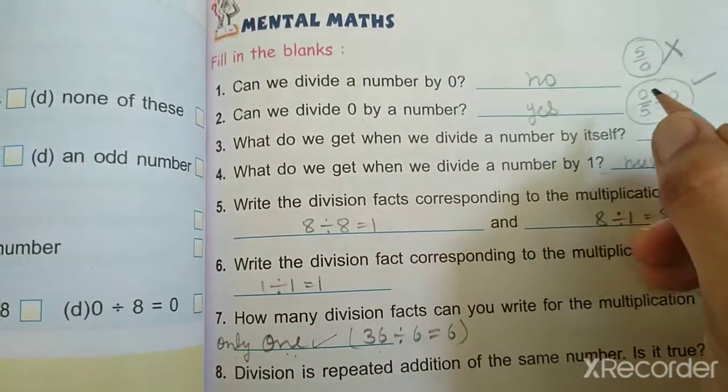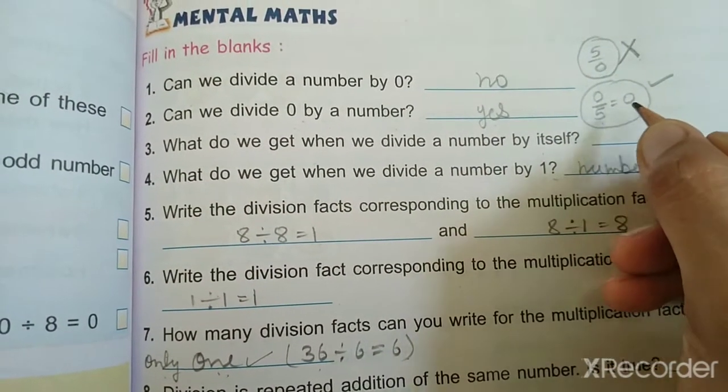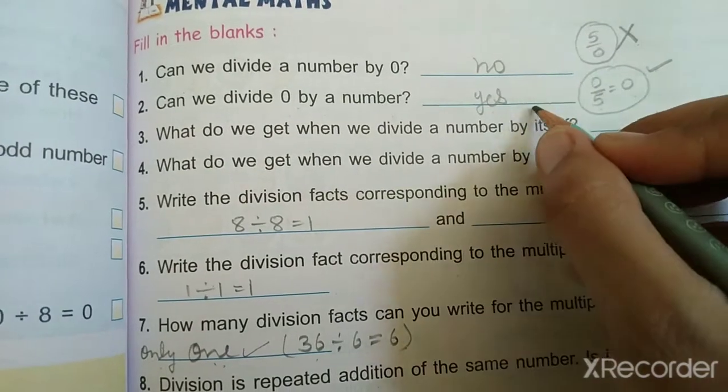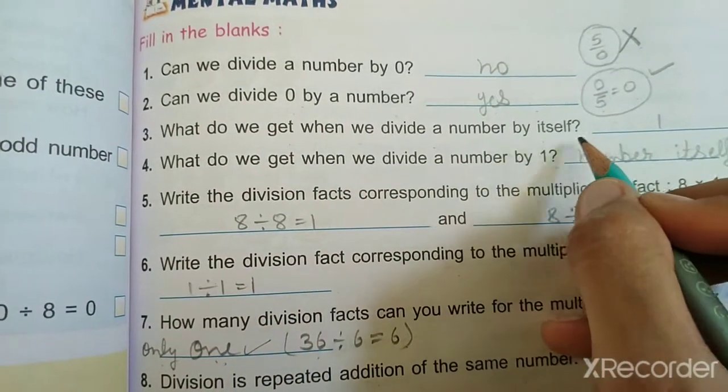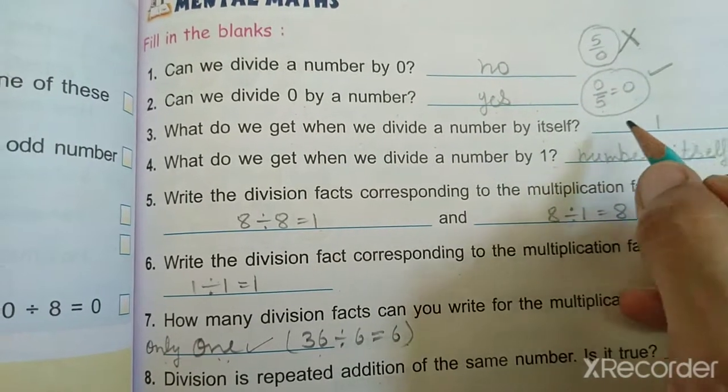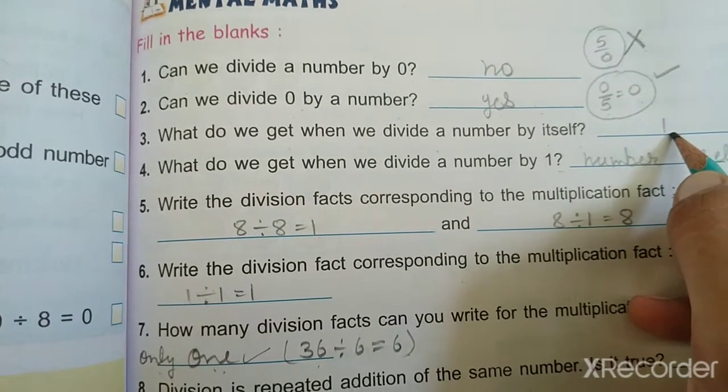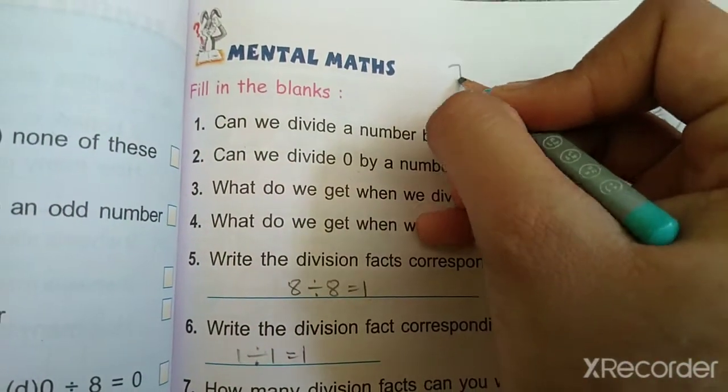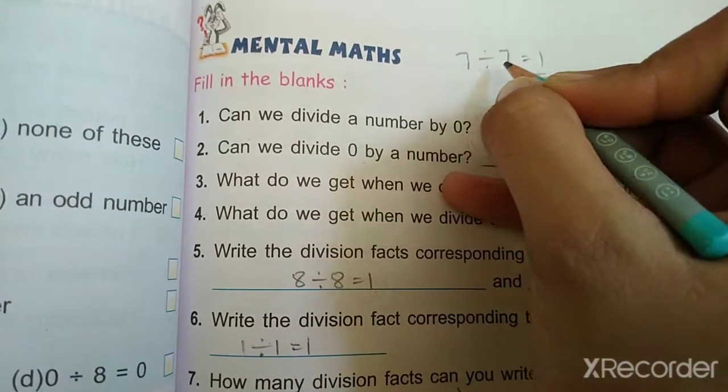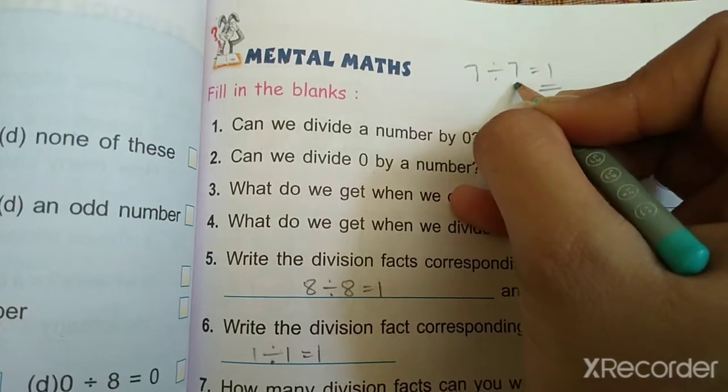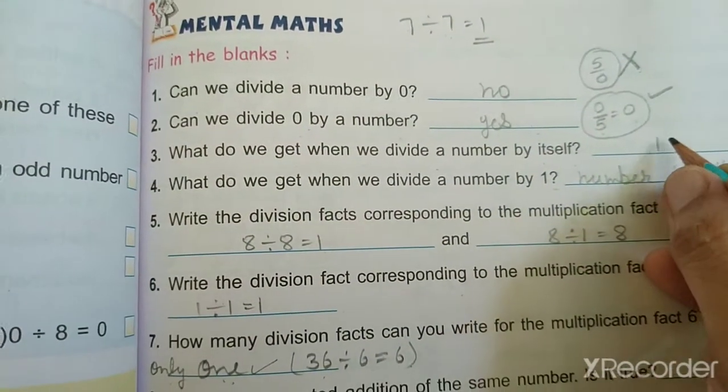If we divide 0 by 0 or any number by 0, it will be 0. What do we get when we divide a number by itself? We get 1. For example, 7 divided by 7 will always become 1.